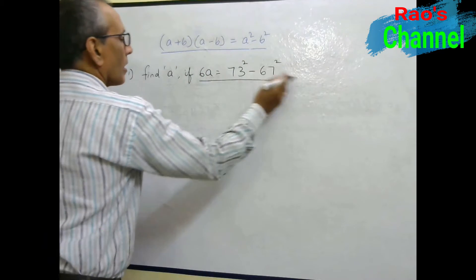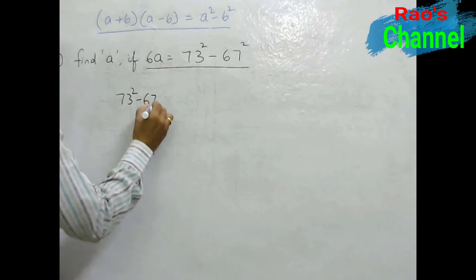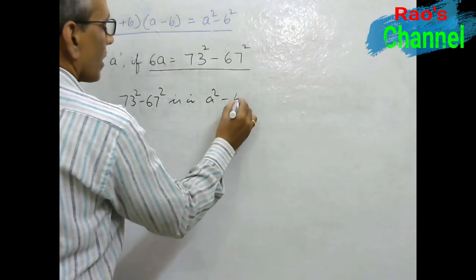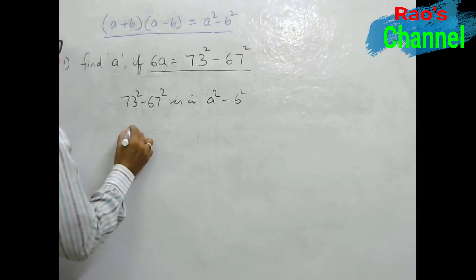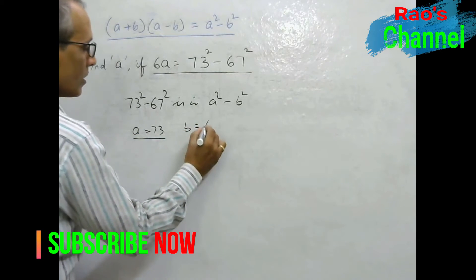So when I copy the question, the RHS part 73 square minus 67 square is in A square minus B square, where A is equal to 73 and B is equal to 67.